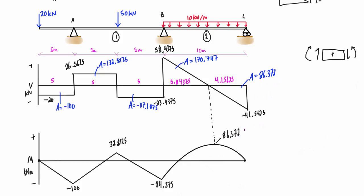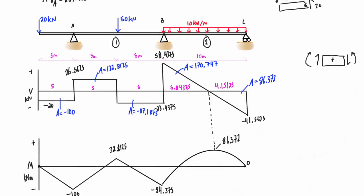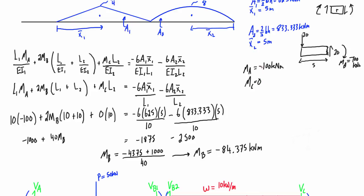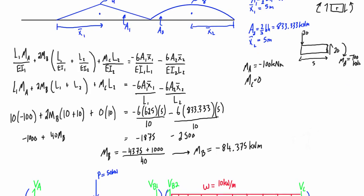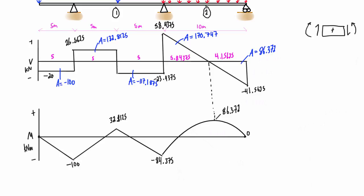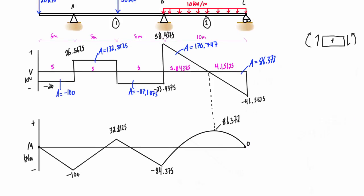The last parabolic region decreases by 86.372, bringing us right back down to zero — exactly as expected. Checking against the internal moments calculated earlier: MA = −100, MB = −84.375, and MC = 0. All three match perfectly, confirming we've done this correctly.